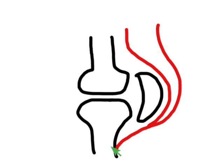This tendon tugs at this bone because that's how it works. And over time you develop inflammation, pain, and swelling in this area. It's usually very localized tenderness — it hurts right here when you touch it. It gets worse with activity when you flex your leg, and when you rest, it gets better.